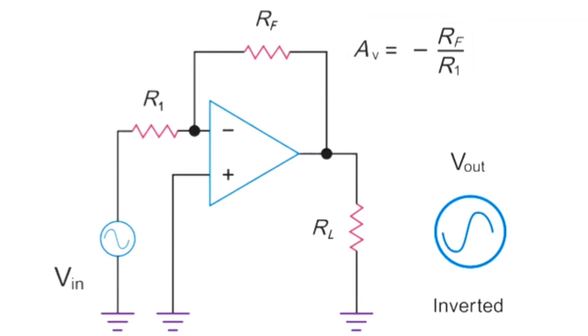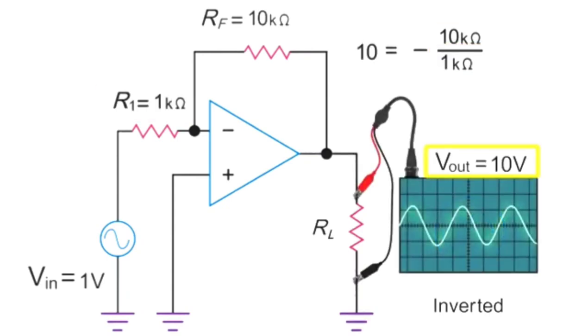Therefore, an input of 1 volt with a feedback resistor value RF of 10 kiloohms divided by an R1 value of 1 kiloohms will yield a 10 volt output signal that is exactly inverted from the original input wave.